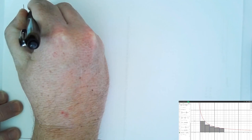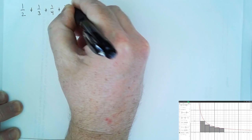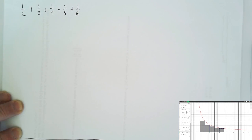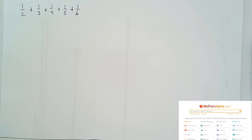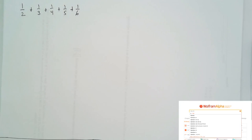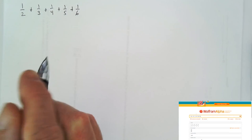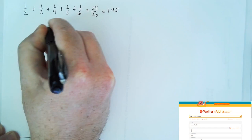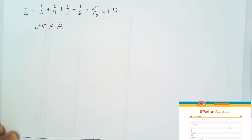Let's compute that estimate. Our five rectangles have areas 1 half, 1 third, 1 fourth, 1 fifth, and 1 sixth. We could compute this by typing 1 half plus 1 third plus 1 fourth plus 1 fifth plus 1 sixth into a calculator or computer. So what we know is the area we're looking for has to be greater than approximately 1.45.